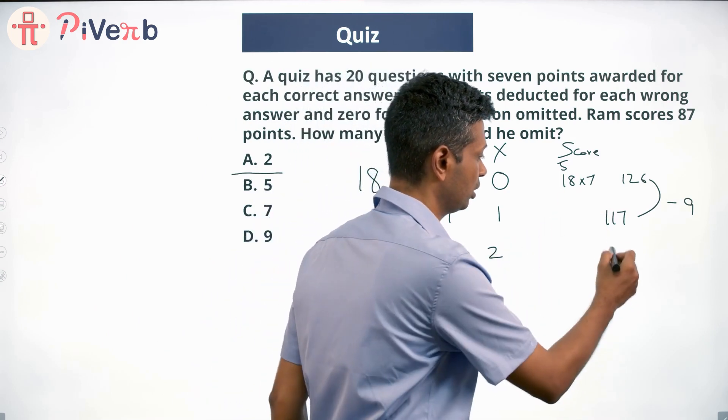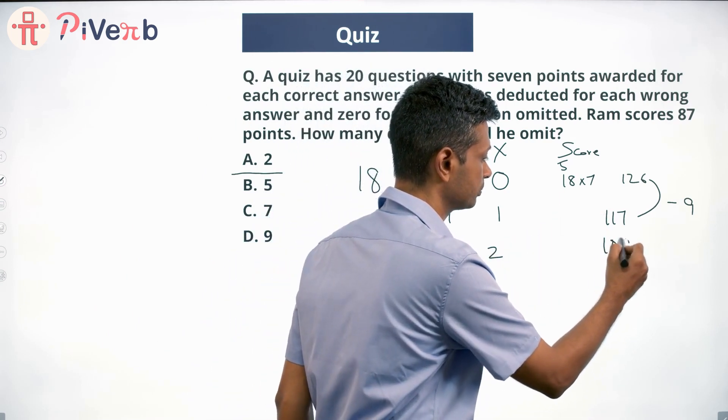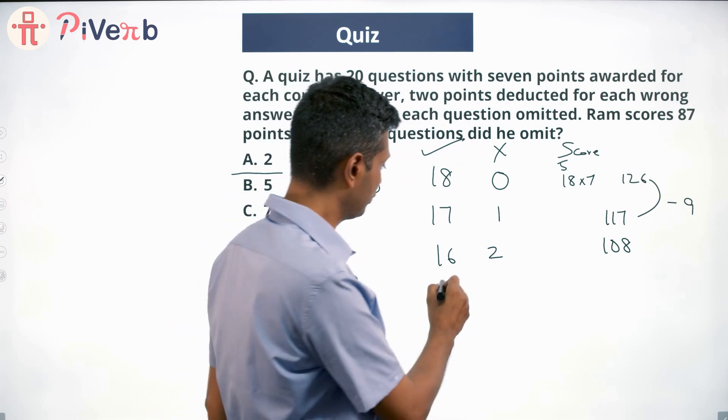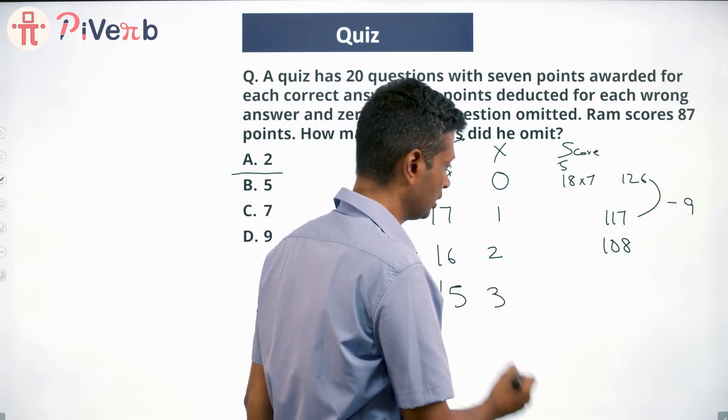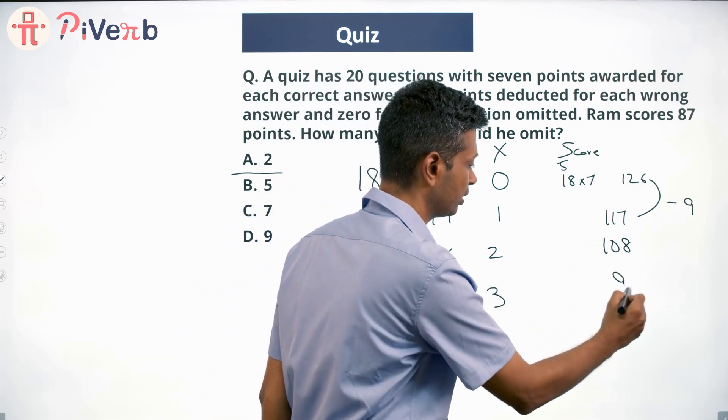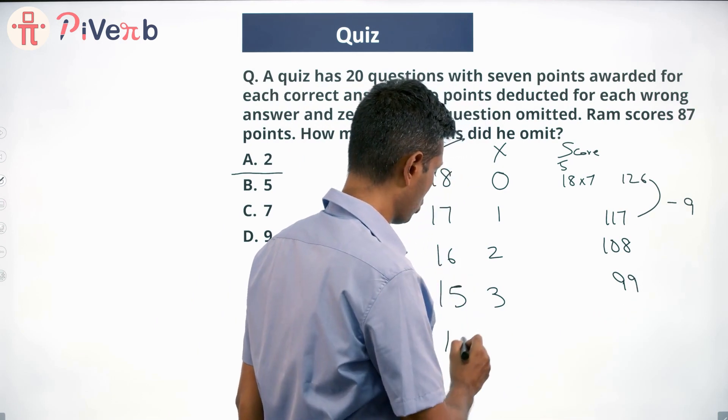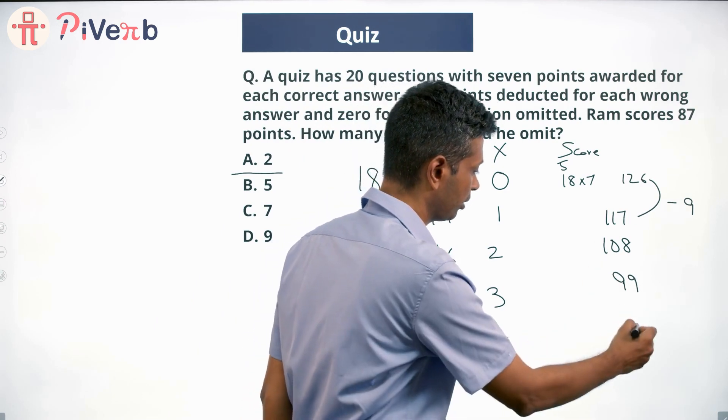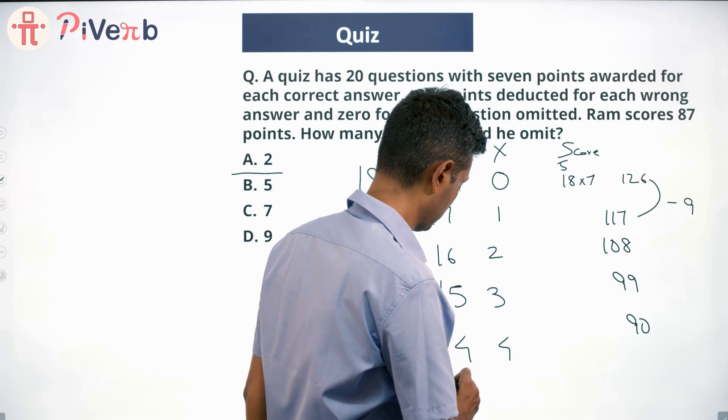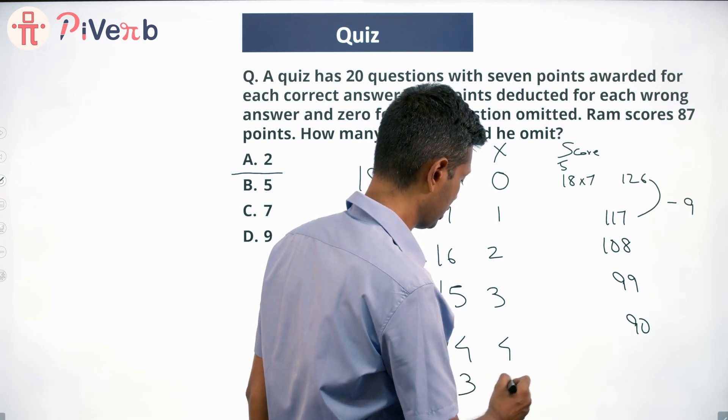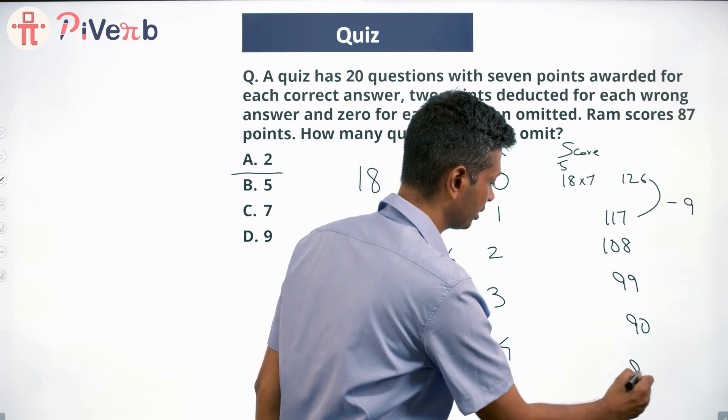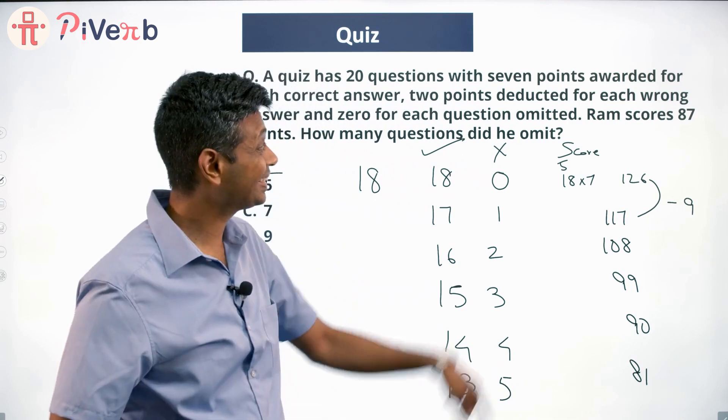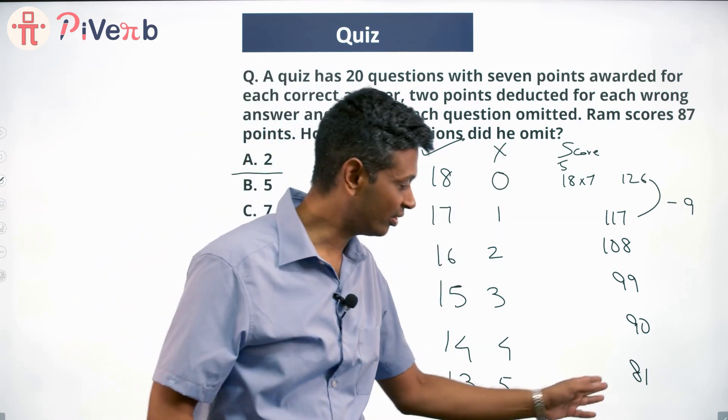Now this becomes very simple. If he had 16 and 2, he'll get 117 minus 9, which is 108. If he had 15 and 3, 108 minus 9, 99. If he had 14 and 4, 99 minus 9, 90. 13 and 5, 90 minus 9, 81.